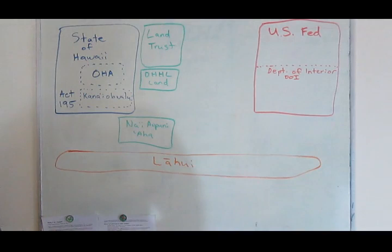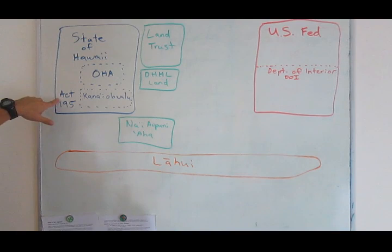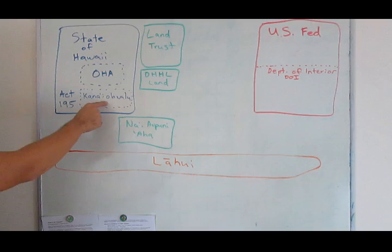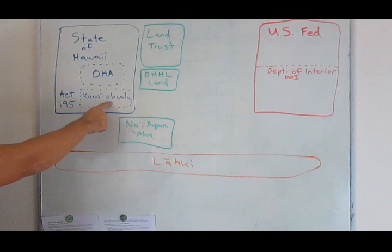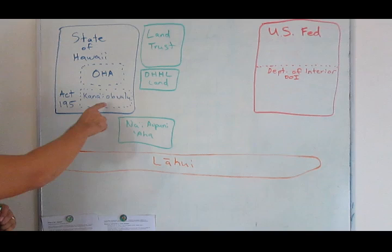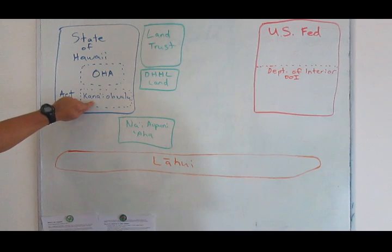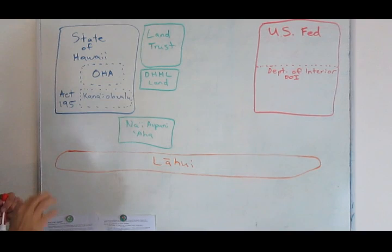First, we've got the state of Hawaii. The state of Hawaii really kicked off this process in 2011, when Act 195 was signed into law by Abercrombie. That's what created the Native Hawaiian Role Commission, otherwise known as Kana'i Oluwalu. This is the list which was intended to register Hawaiians in order to be involved in nation building. This became somewhat controversial because of the requirements needed to sign on to the list. Not all Hawaiians could agree to that for certain reasons.